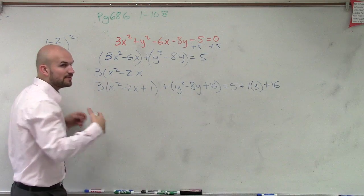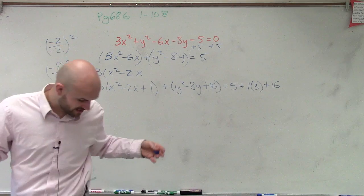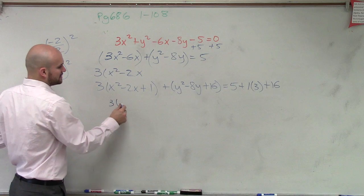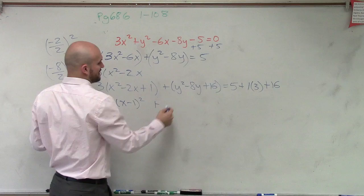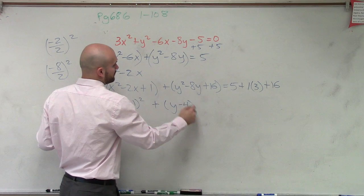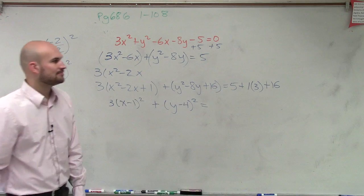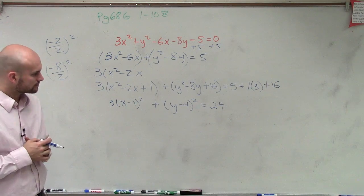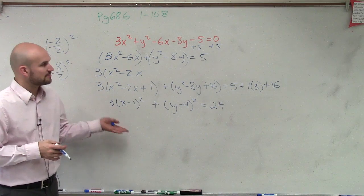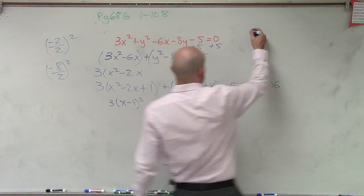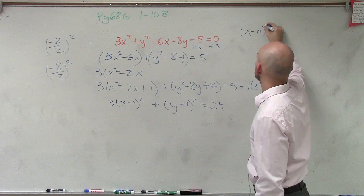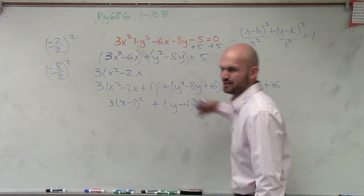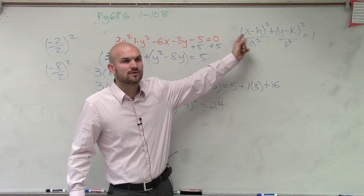The whole reason why we complete the square is to create a perfect square trinomial. We like perfect square trinomials because we can factor them down to binomial squares. So factoring gives us 3 times (x minus 1) squared plus (y minus 4) squared equals 5 plus 3 is 8, plus 16 is 24. Now remember, our standard formula looks like (x minus h) squared over b squared plus (y minus k) squared over a squared equals 1.